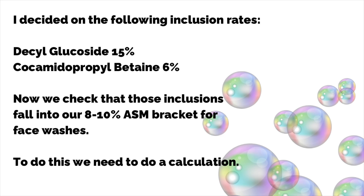I've decided on the following inclusion rates based on the manufacturer information and how cleansing and mild I want the product to be: decyl glucoside at 15% and cocamidopropyl betaine at 6%. Now we need to check that those inclusions fall into our 8–10% ASM bracket for our face wash, so we need to do a calculation.